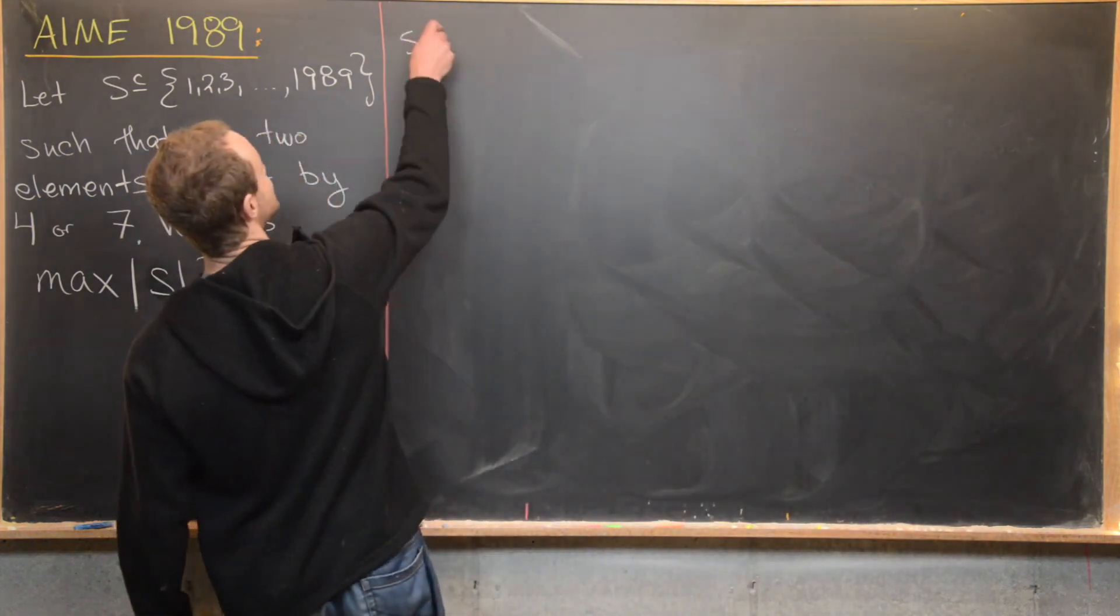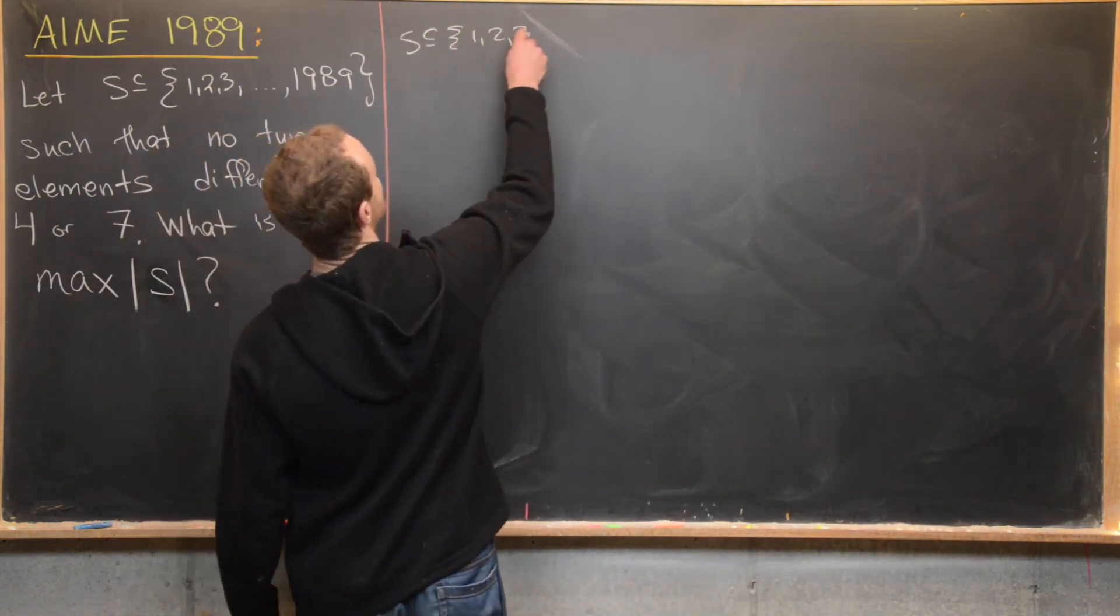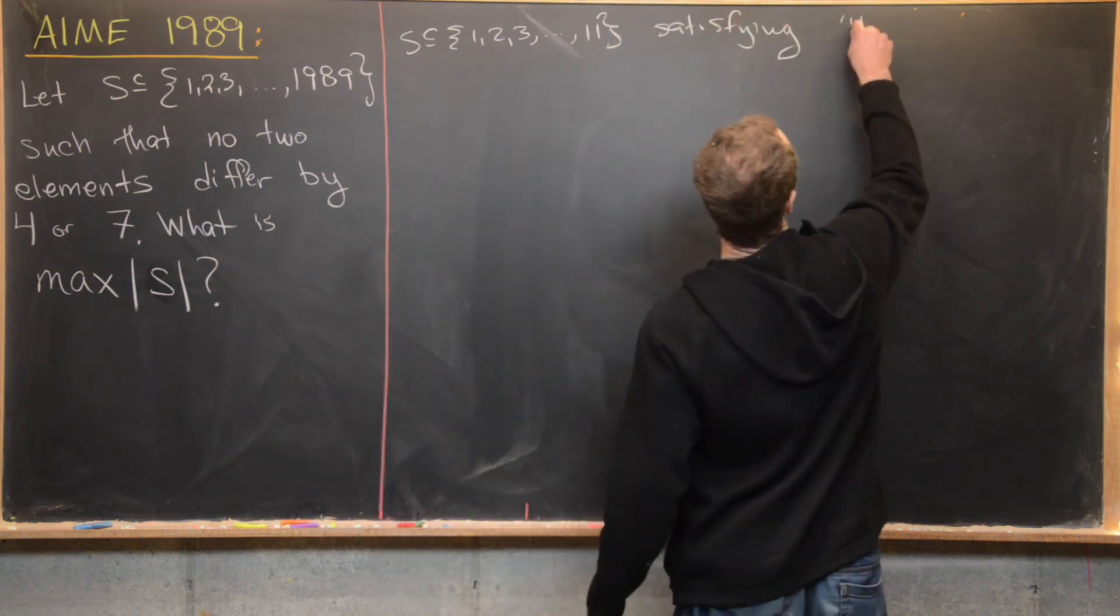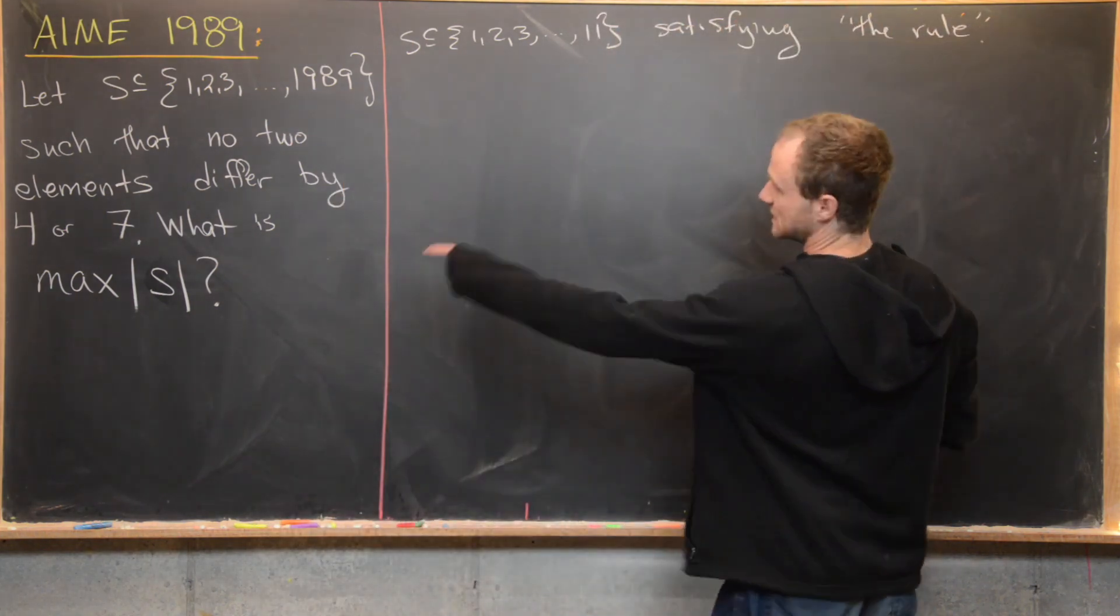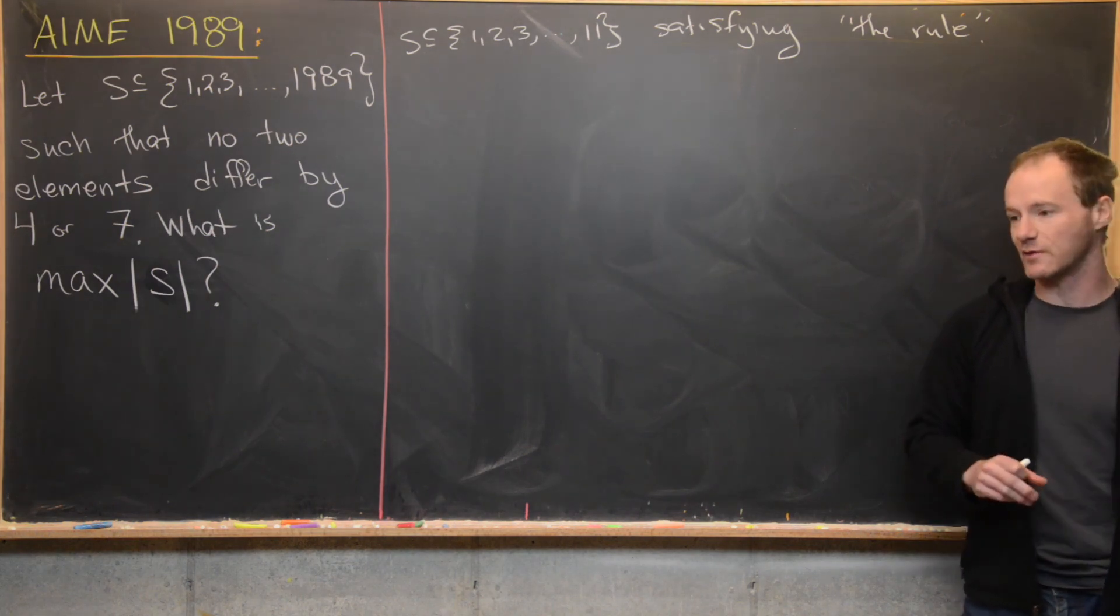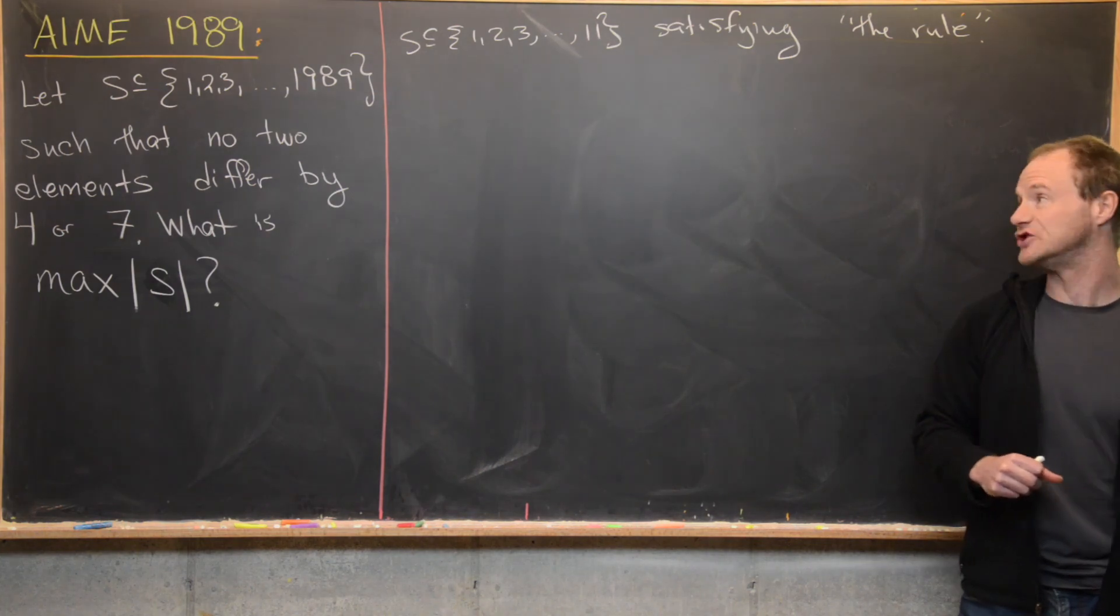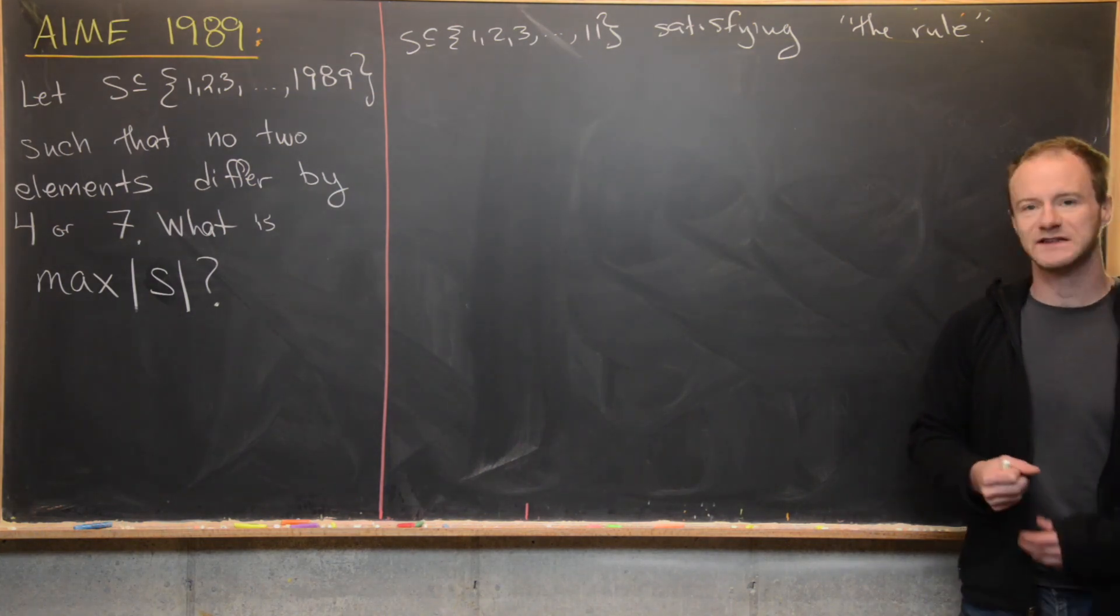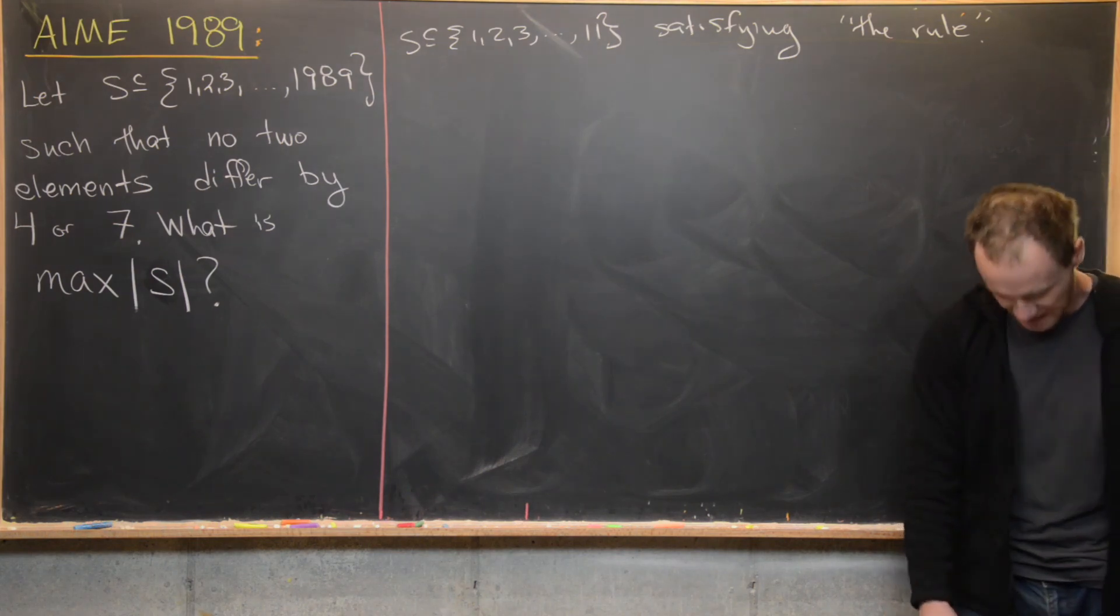So let's look at S, a subset of 1, 2, 3, all the way up to 11, satisfying the rule, which is this difference condition. And now, the next thing that you would do, which I'm not going to do on camera, but would be just to try to look for as large of a set as you can. So it's easy to find some one element sets, obviously, some two element sets, some three element sets, some four element sets.